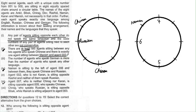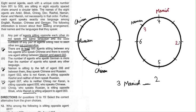Now checking for Manish: there is exactly one person between Manish and agent 002, and from the last condition Manish is sitting adjacent to agent 003. So the arrangement must be: 003, Manish, blank, 002. Testing each possible position for 003 around the circle, two cases initially appear valid. One case is eliminated because agent 002 ends up at a position already occupied by 005.